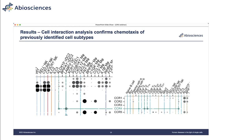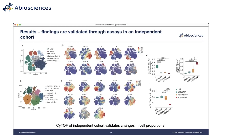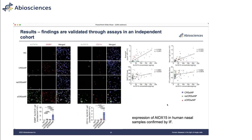Finally, we sought validation through other technologies. We validated the study through an independent cohort — collecting three more individuals from each group — and used CyTOF to validate the existence of cells expressing the markers identified from gene expression data. All results were positive and the changing populations were also validated. We also confirmed expression using immunofluorescence — all positive results, which give us more confidence in the findings.